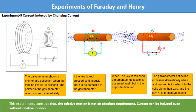When the key is released, a momentary deflection is observed again, but in the opposite direction. It is also observed that the deflection increases dramatically, when an iron rod is inserted into the coils along their axis, and the key is pressed or released. This experiment concludes that the relative motion is not an absolute requirement. Current can be induced even without relative motion.